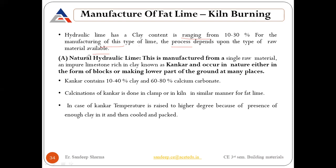There are two kinds of lime: natural hydraulic lime and artificial hydraulic lime. Natural hydraulic lime is manufactured from a single raw material — impure limestone rich in clay known as kunker — which occurs in nature either in the form of blocks or making up the lower part of the ground at many places. Kunker contains 10 to 40 percent clay and 60 to 80 percent calcium carbonate. The calcination of kunker is done in a clamp or kiln in a similar manner to fat lime.